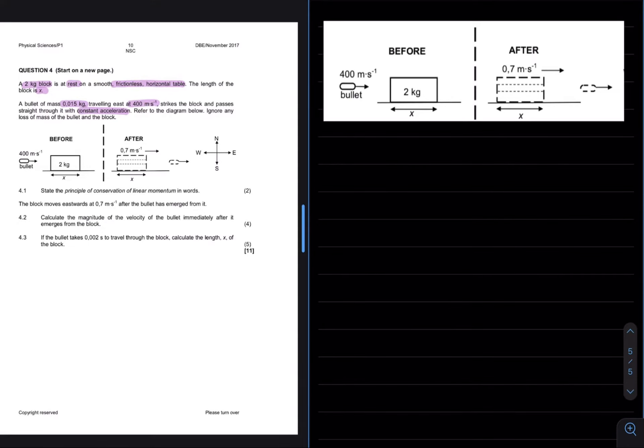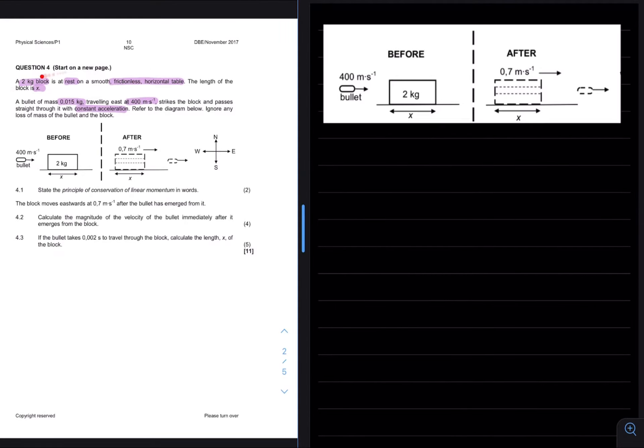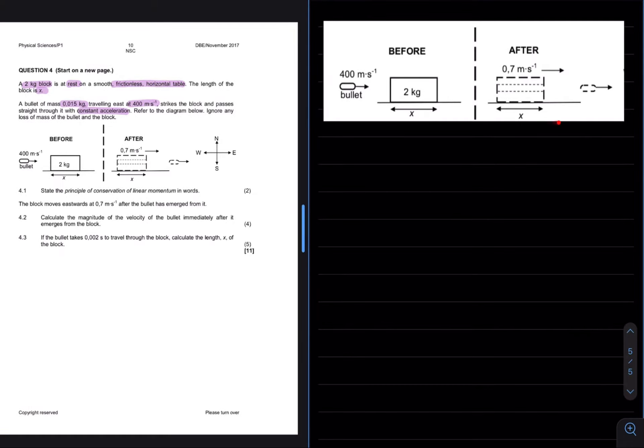Remember that your brain always works better with images. Therefore we are going to take all the information that we were given in this section and put it on our diagram. The initial velocity of the bullet was indicated as 400m per second. The initial velocity of the block is 0 seeing as it is stationary.